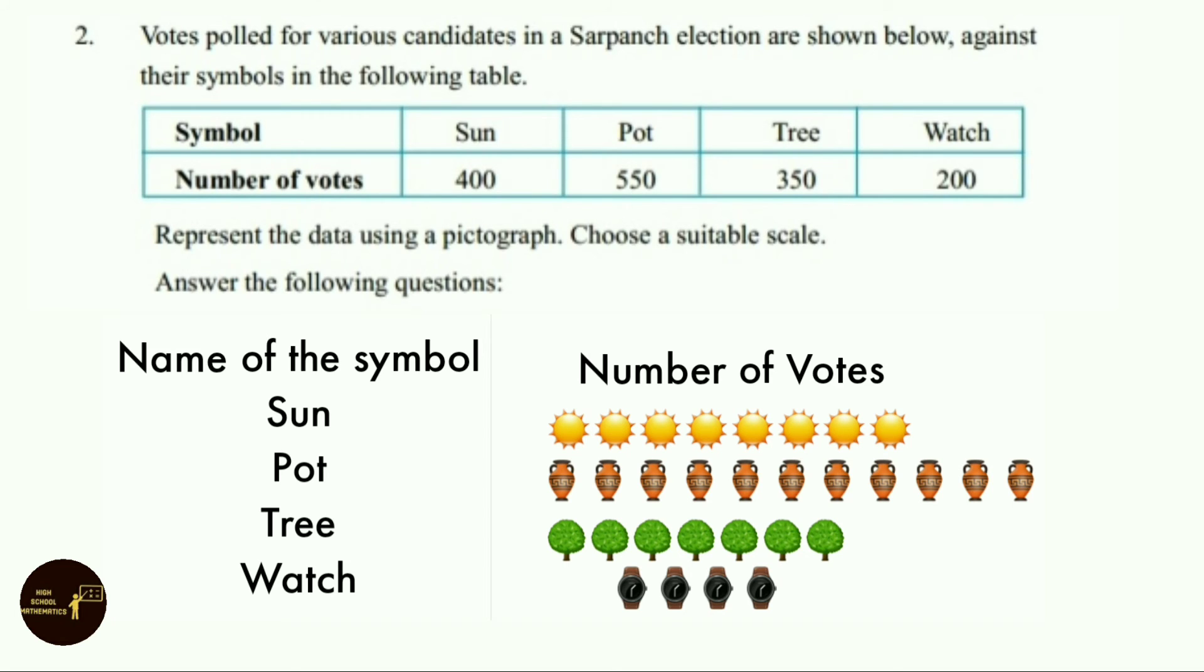Tree symbol had 350 votes, so we represented them with 7 tree symbols. And watch symbol had 200 votes, so we represented them with 4 watch symbols.